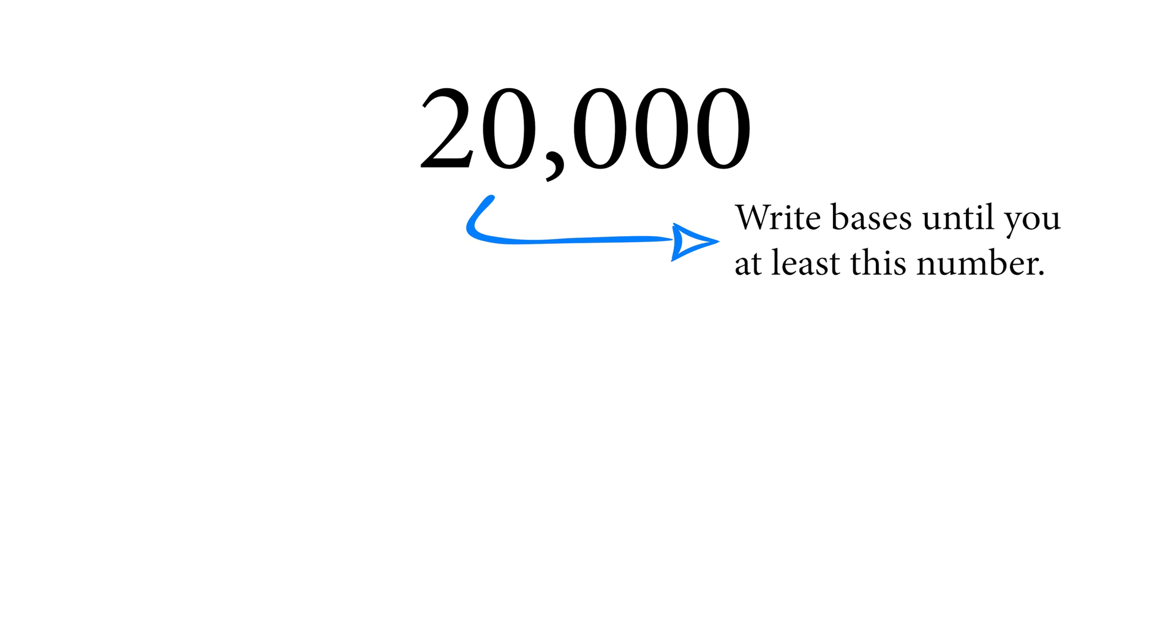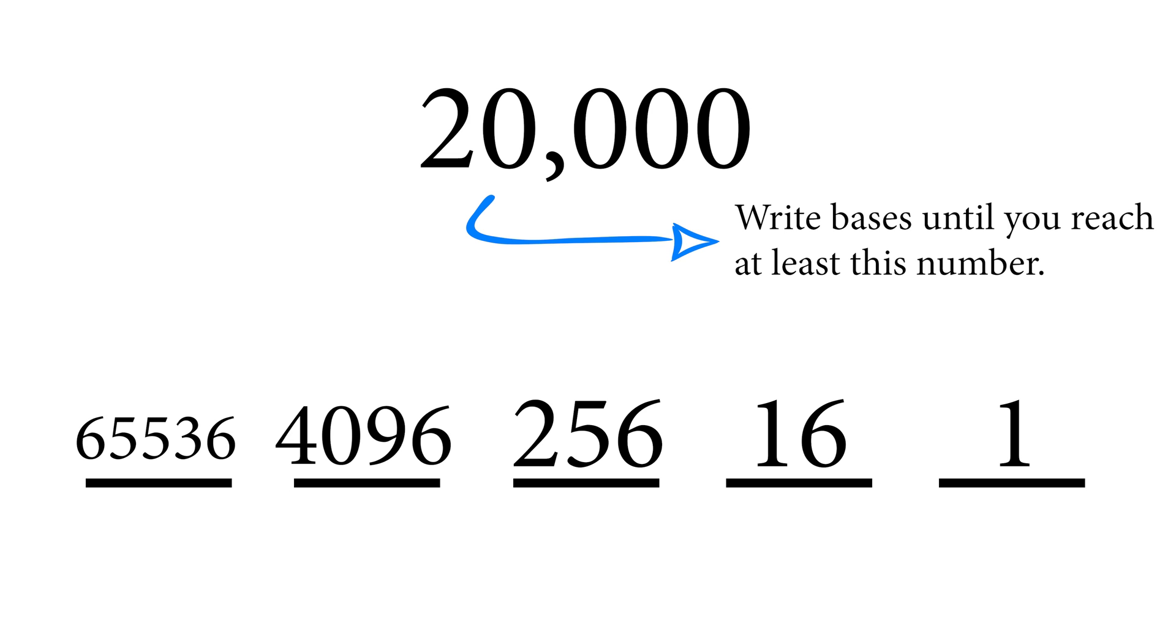So let's start with 20,000, a little bigger number here, and same with binary you're going to want to set up your bases. So you have 1, 16, 256, 4,096, 65,536.